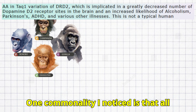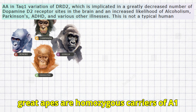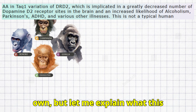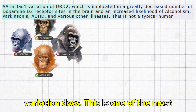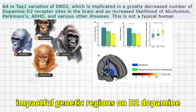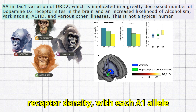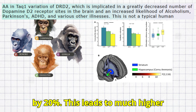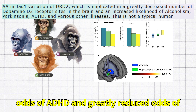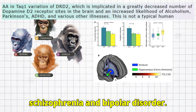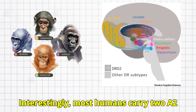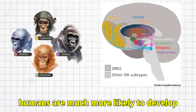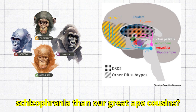One commonality I noticed is that all great apes are homozygous carriers of A1 alleles in DRD2's TAC1 variation. This is one of the most impactful genetic regions on D2 dopamine receptor density, with each A1 allele reducing the availability of D2 receptors by 20%. This leads to much higher odds of ADHD and greatly reduced odds of schizophrenia and bipolar disorder. Interestingly, most humans carry two A2 variants, with the A1 variant being rarely found. Perhaps this is the reason humans are much more likely to develop schizophrenia than our great ape cousins?